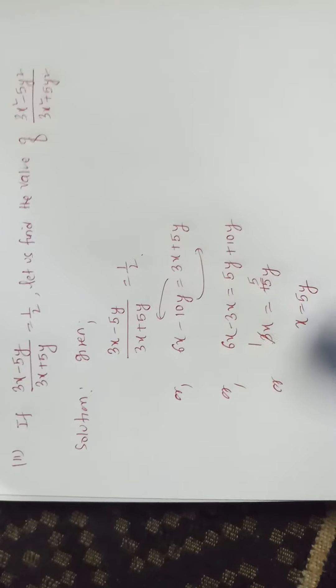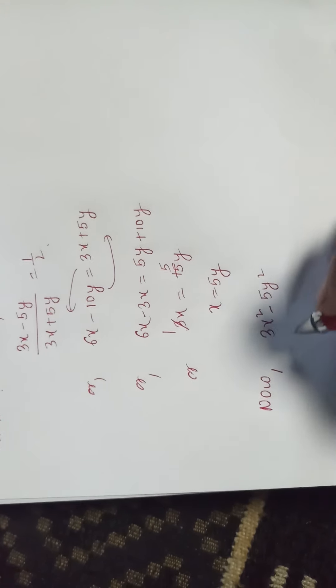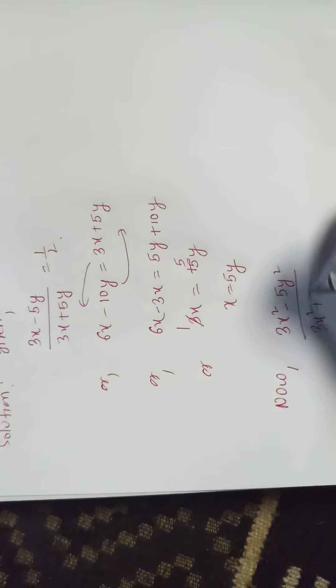Now, let's find 3x square minus 5y square by 3x square plus 5y square.